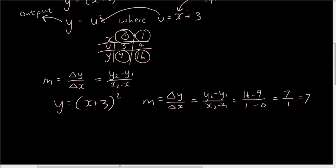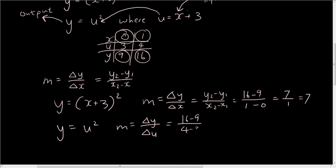Now let's look at our second equation: y equals u squared. The gradient is equal to change in the vertical axis over change in the horizontal axis, which is change in y over change in u. So we have 16 minus 9 over 4 minus 3, because u is 4 on the second point and 3 on the first point. So that's 7 over 1, so it's still 7.